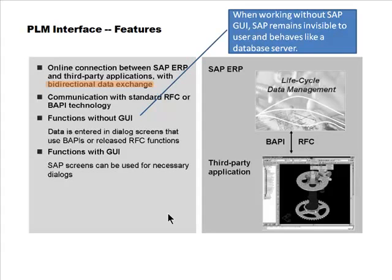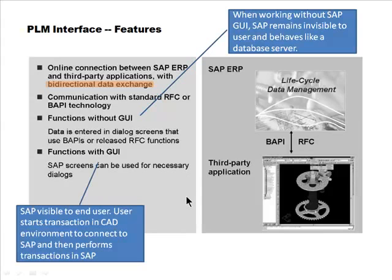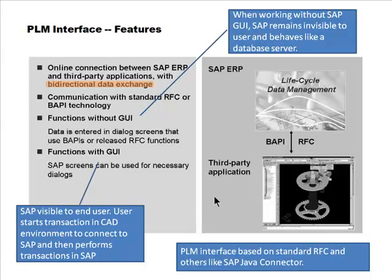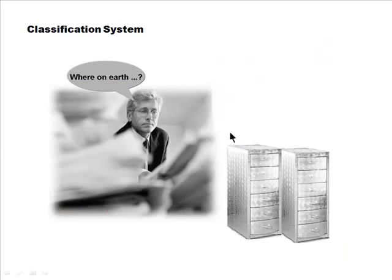When working without the GUI, SAP just behaves like a database server and the GUI remains hidden. When working with the GUI, SAP is visible and the user works from within SAP. Standard interfaces and the Java connector are used for these integrations. That covers the PLM interface and SAP's connection to external systems.